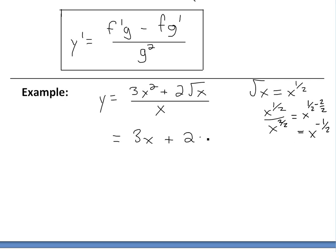So we can write the simplified function as y equals 3x plus 2 times x to the negative one-half. If we apply the derivative to this simplified form, it makes it so much easier — we don't need to use the quotient rule at all. The derivative of 3x is just 3.